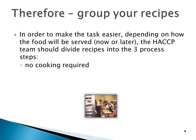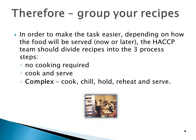Process one would be there's no cooking required — a cold salad, for example. We're not going to cook that product, so that'll be one group of recipes where we don't have cooking to kill bacteria. The second group is cook and serve — we're going to cook that product and serve it immediately. The third would be complex, meaning we're going to cook it, chill it, hold it, reheat it, and serve it. Complex doesn't mean difficult — it means you cook it, chill it, and reheat it later.